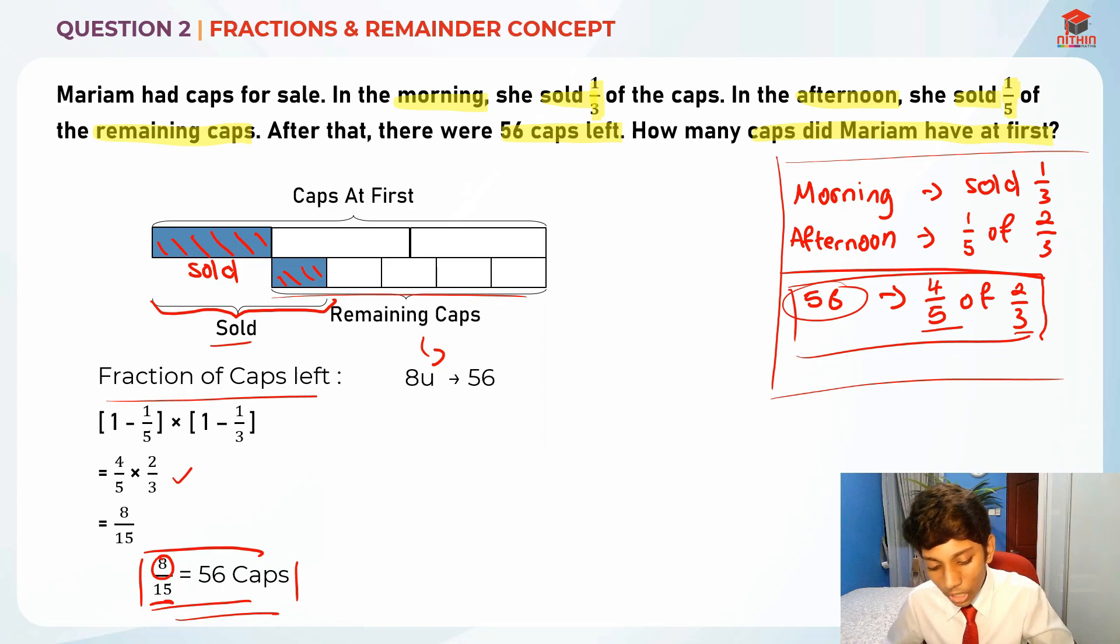Whenever we have something like this, what do I always tell you, find one unit. To find one unit you take 56 divided by 8 which will give you 7. So one unit is 7. How many caps did Mariam have at first?